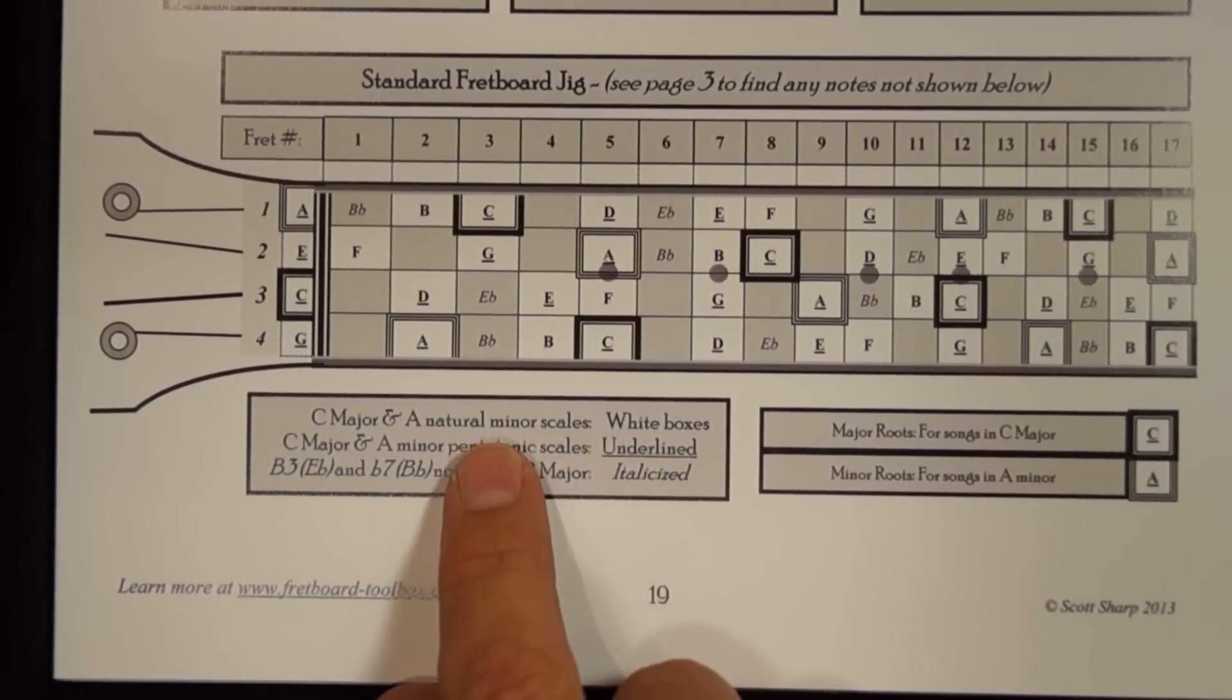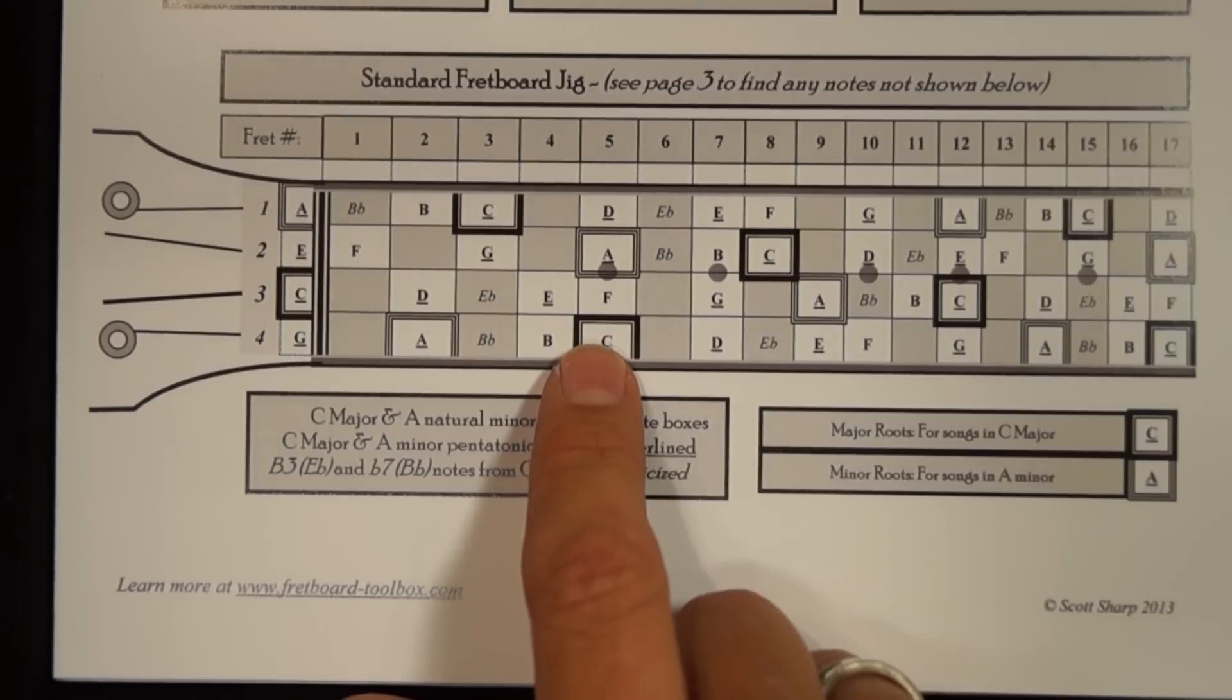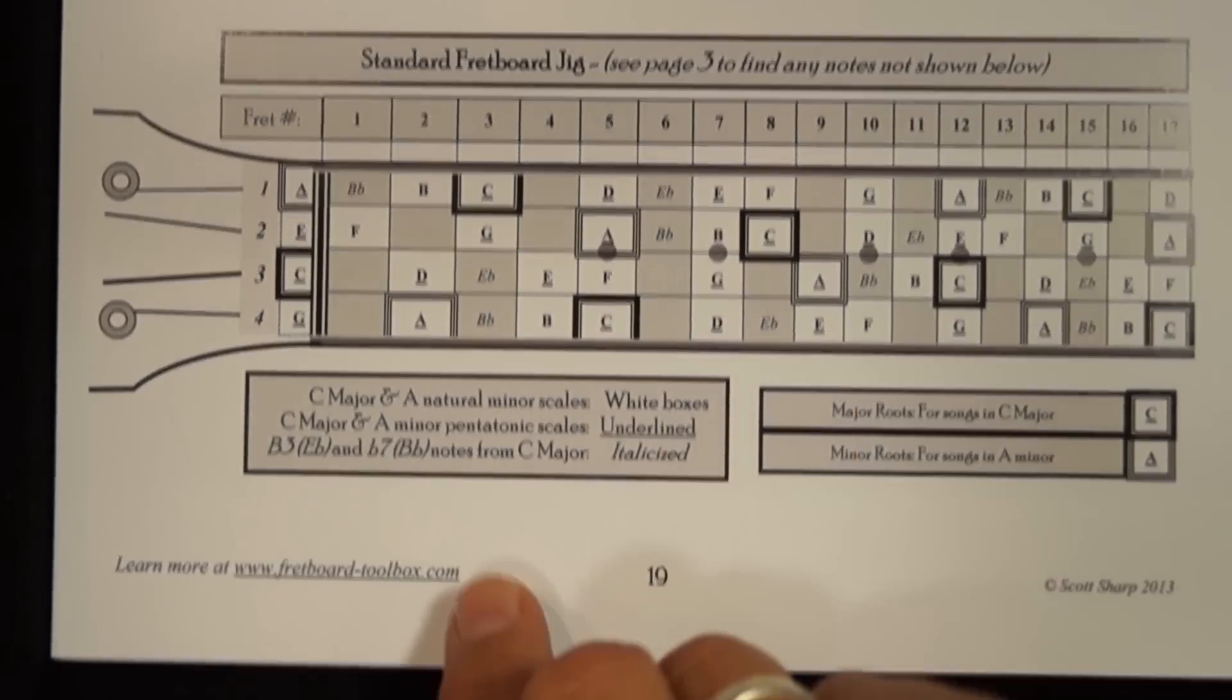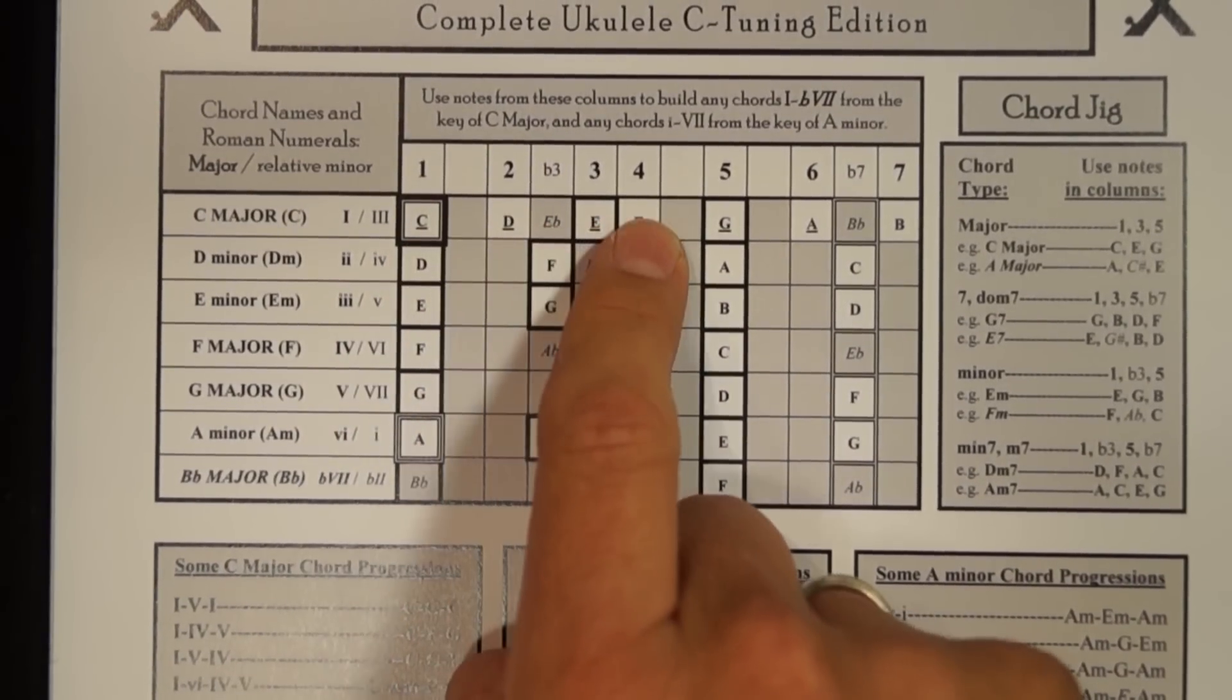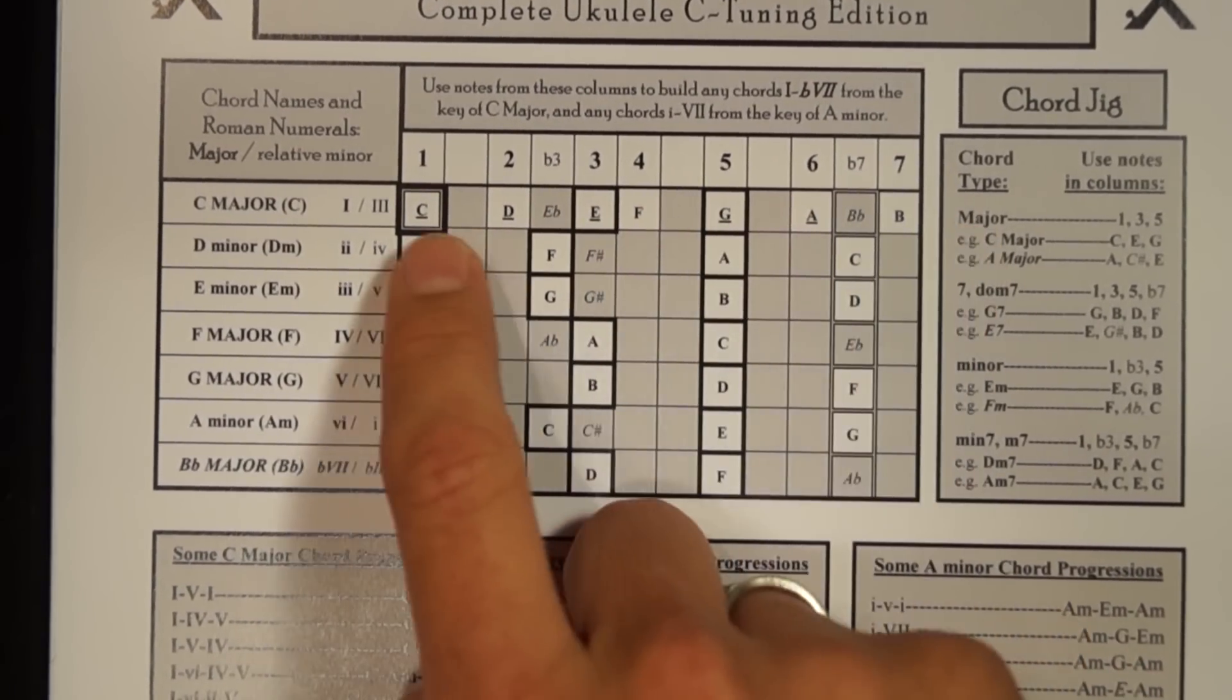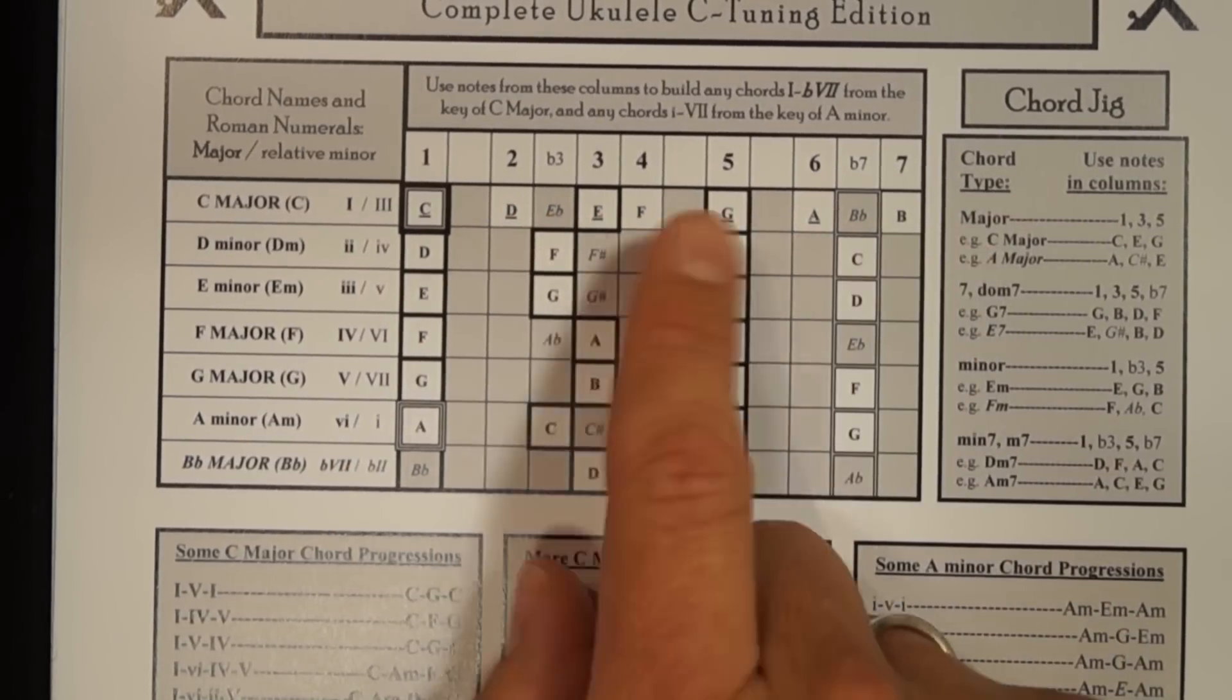The key of A minor is called the relative minor of C major, but we'll worry about minor keys in another video. So C notes, white boxes are the C major scale. Then the underlying notes are what's called the pentatonic scale. So my C major pentatonic scale is going to be any notes you see here that are underlined. Major scales are made out of taking notes in the 1, 2, 3, 4, 5, 6, 7 boxes. That's DO, RE, MI, FA, SO, LA, TI, if you know that system.